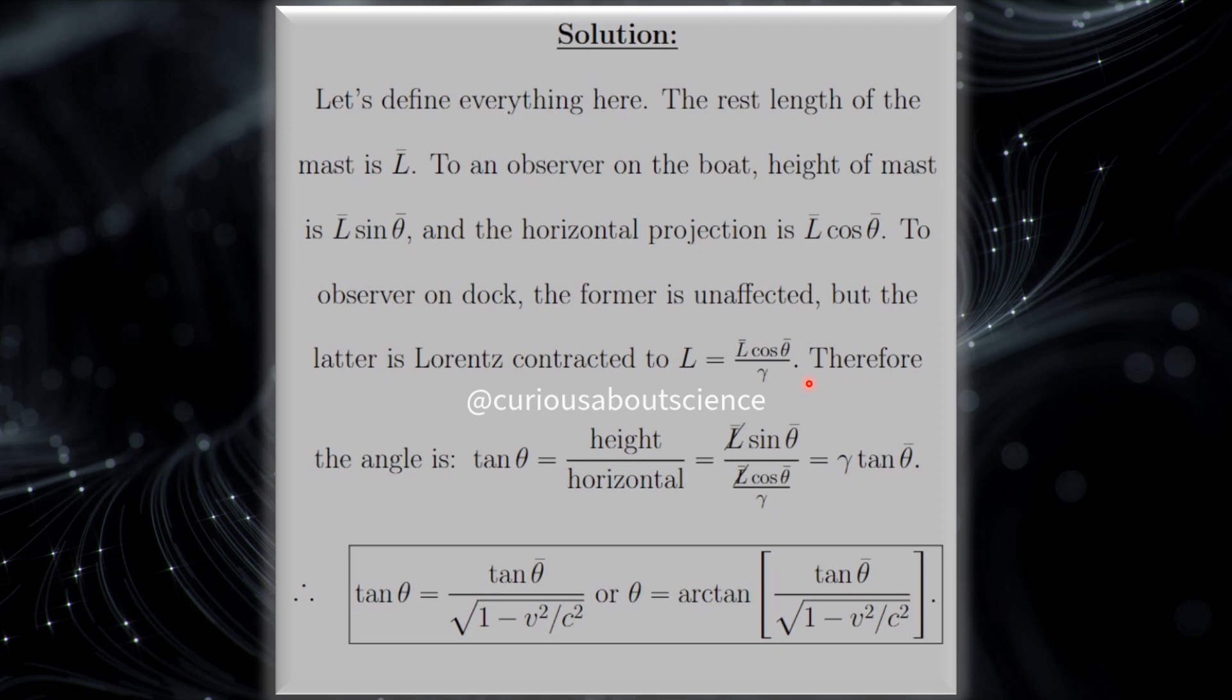Remember that the contraction length can only happen in the direction of motion. So, since the speed of the vessel is going to the right, it's only the horizontal component that gets Lorentz-contracted, not the vertical component.